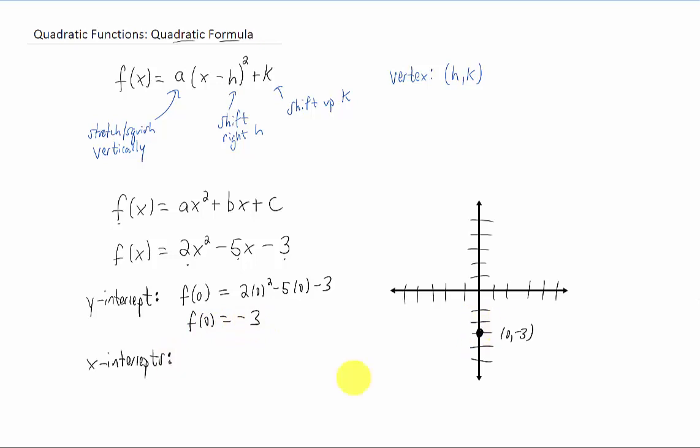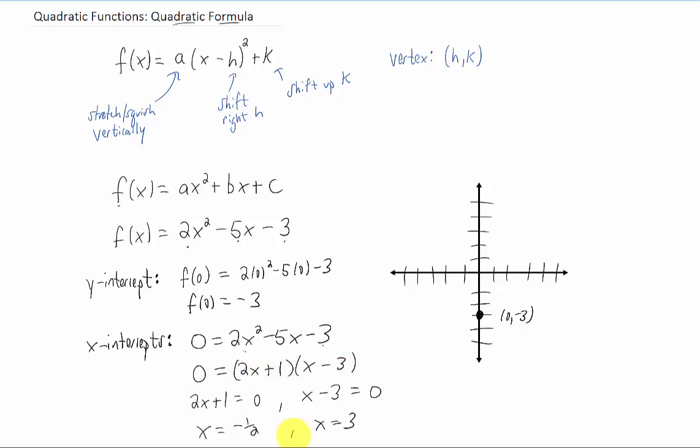Well, how about x-intercepts? To find x-intercepts, we replace y with zero, or we replace the function value with zero, and we solve for x. In this specific example, we can factor the right-hand side using whatever method you like. You can split this up into two different problems, and we get two x-intercepts. We get negative one-half zero, and we get three zero.